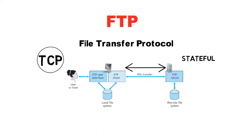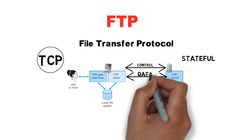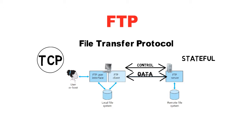FTP makes use of two parallel connections: one is the control connection and one is the data connection. The control connection is used to transfer the FTP control commands between client and server, and the data connection is used to transfer the actual files. The data connection is closed after every file transfer. If you are transferring five files, the data connection will be opened and closed five times.